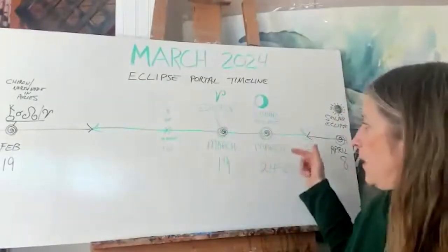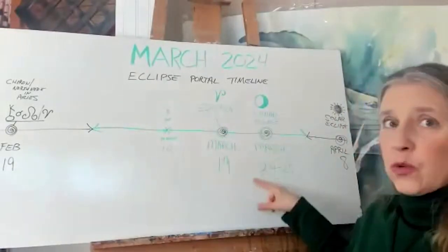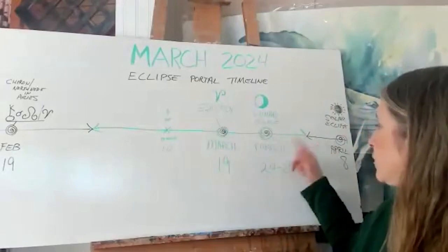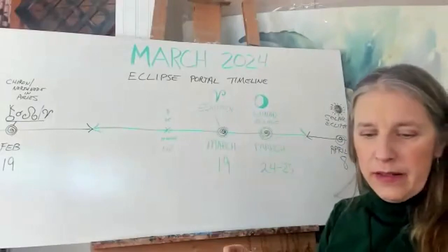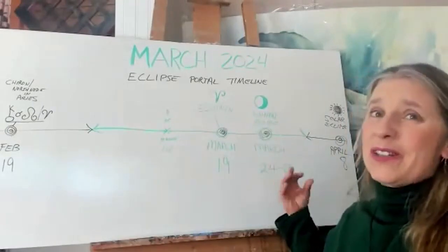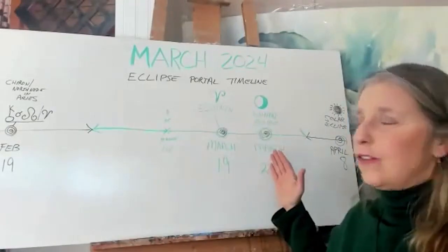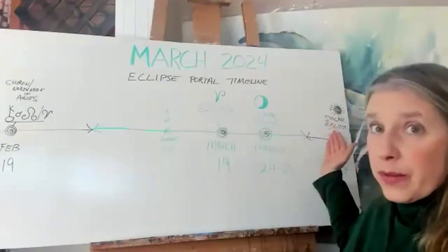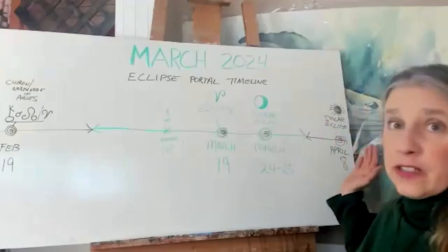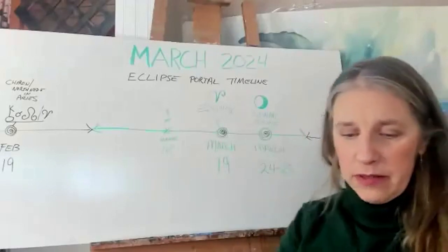We've got the lunar eclipse which happens on March 24th to 25th and that is the sister eclipse to the total solar eclipse on April 8th. This lunar eclipse is going to be the final portal of initiation that we're going to pass through, preparing us for this really intense April 8th solar eclipse.